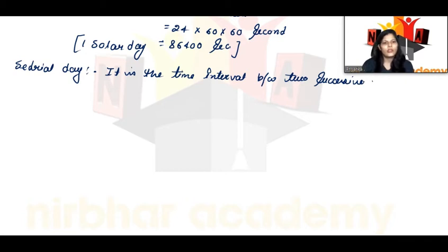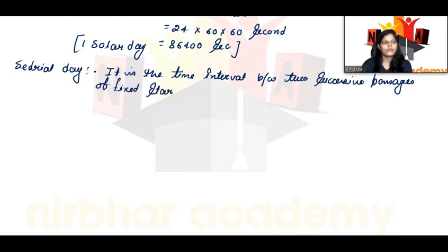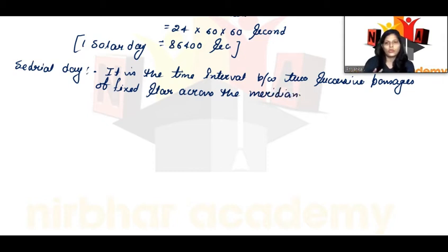The sidereal day is the time interval between successive passes of a fixed star across the meridian. It is the time it takes between two successive positions of the same fixed star.